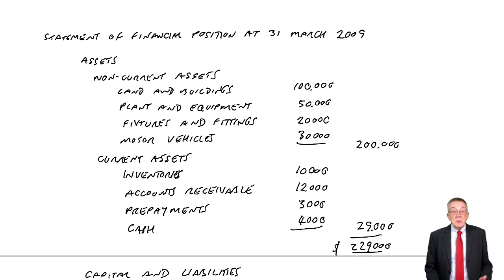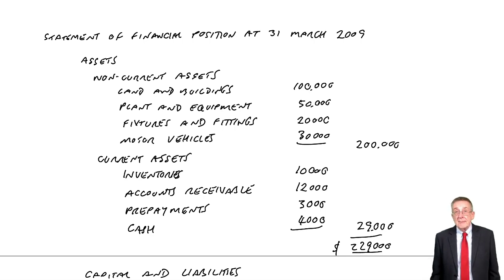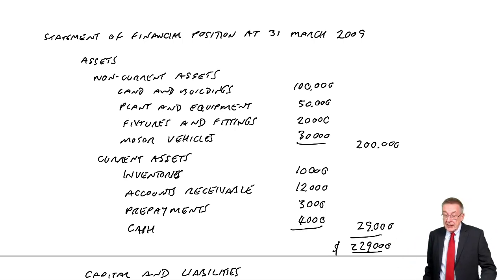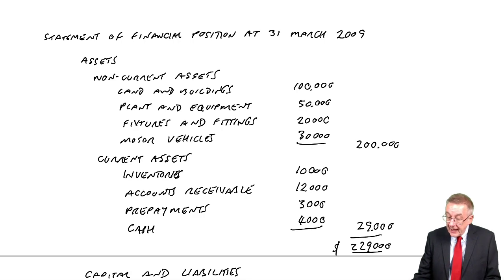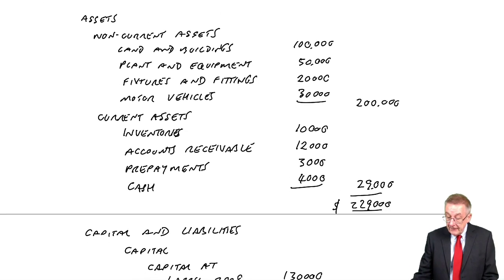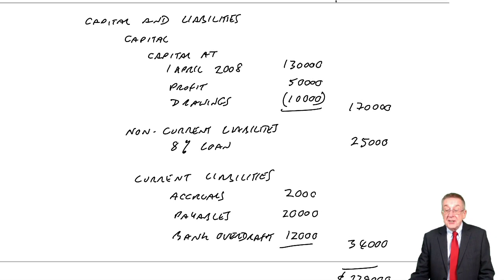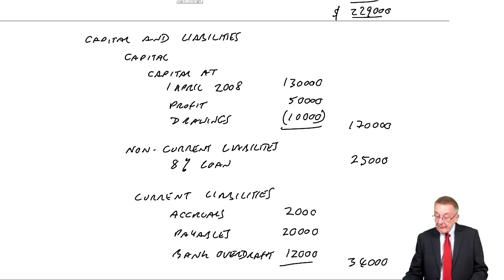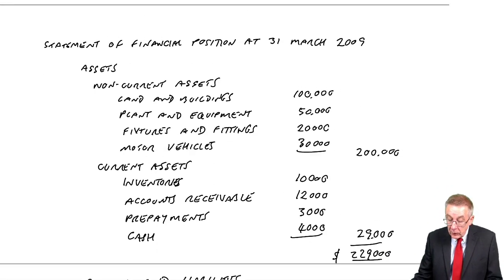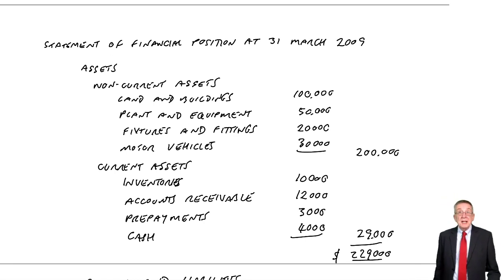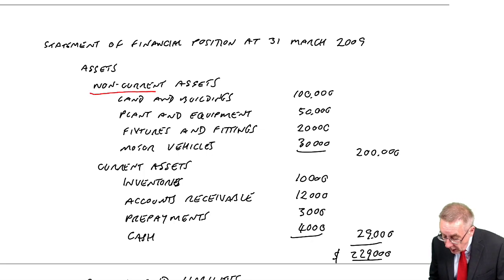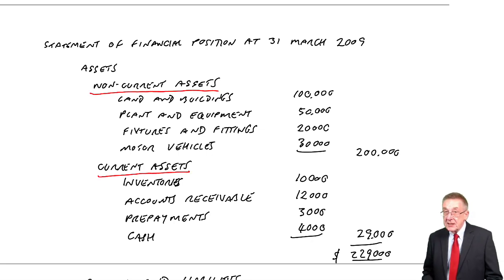The layout is basically as we had in the example in the last lecture. People used to lay it out differently — sideways and so on — but the standard layout these days is to list all the assets, what the business owns, and then below to list what the business owes to the owner (the capital) and to other people. The assets have to be split under two headings: non-current assets and current assets.